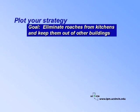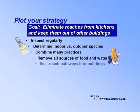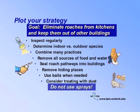The goal of cockroach management in schools is to eliminate them completely from kitchens and to keep them out of other buildings. Inspect regularly to detect roaches as soon as they arrive. Determine if your roaches are indoor or outdoor species and choose appropriate management practices. Combine many practices to prevent roaches and correct problems. Remove all sources of food and water and seal roach pathways into buildings. Be sure to remove places where roaches like to hide, because roaches can't remain where they have no shelter. When you have an infestation, use baits to reduce population numbers while more permanent preventive measures are implemented. Do not use sprays to manage cockroaches — they are not generally recommended or required.